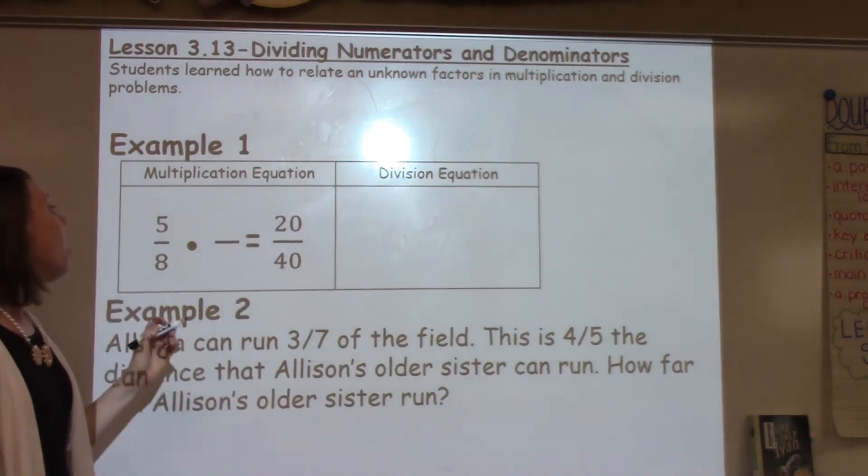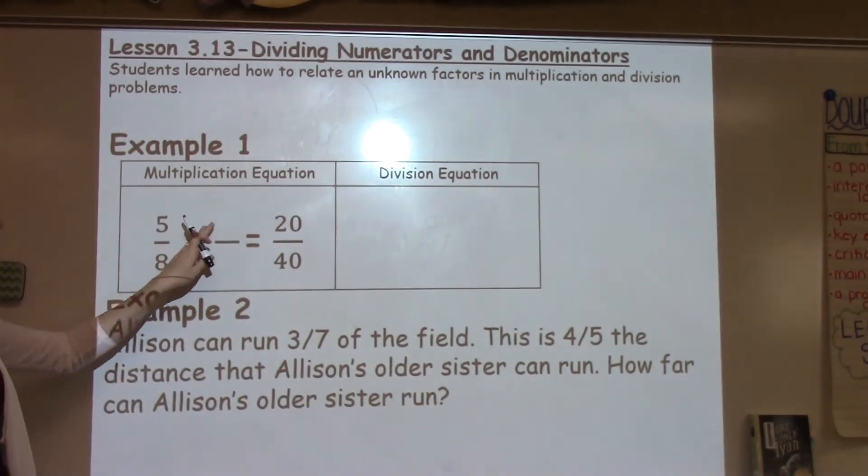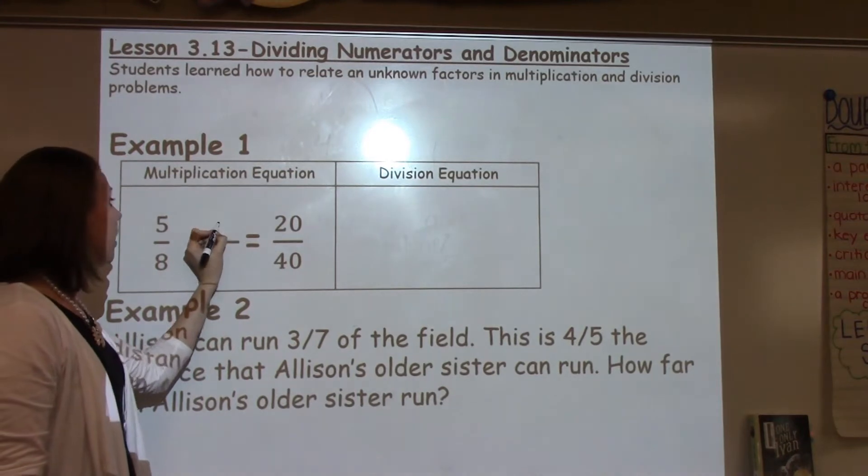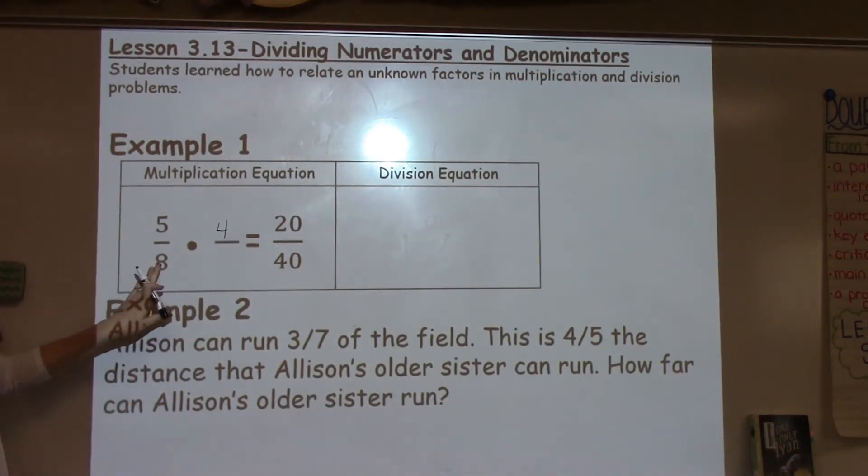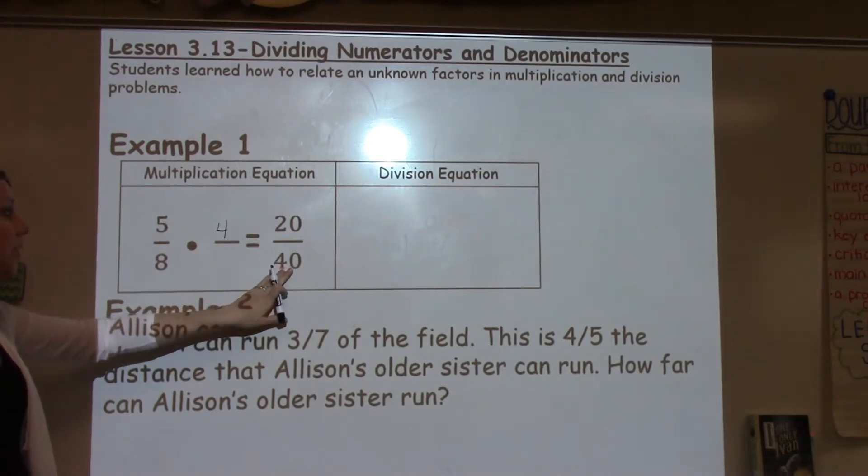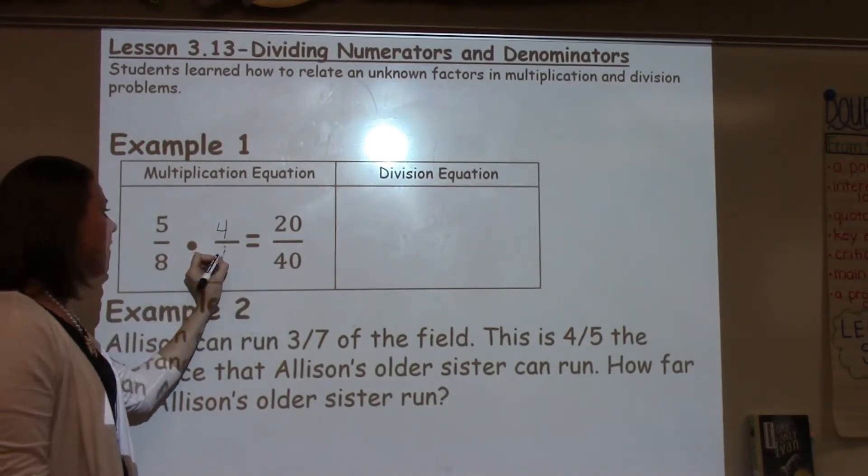We're looking for an equivalent fraction. Thinking in our heads, we can think 5 times something gives me 20. I know 5 times 4 gives me 20, and then I know 8 times something gives me 40. I know that's 5.